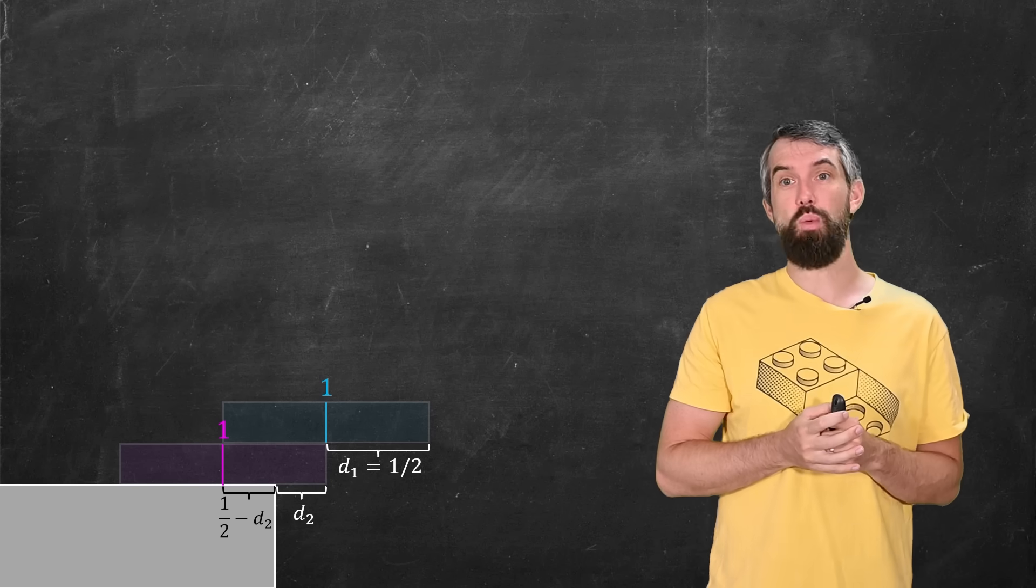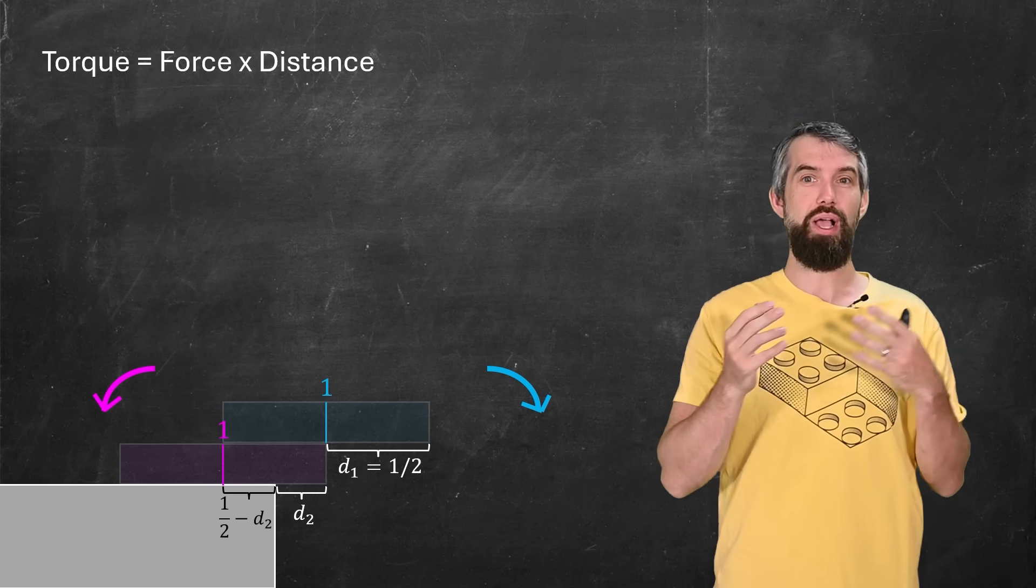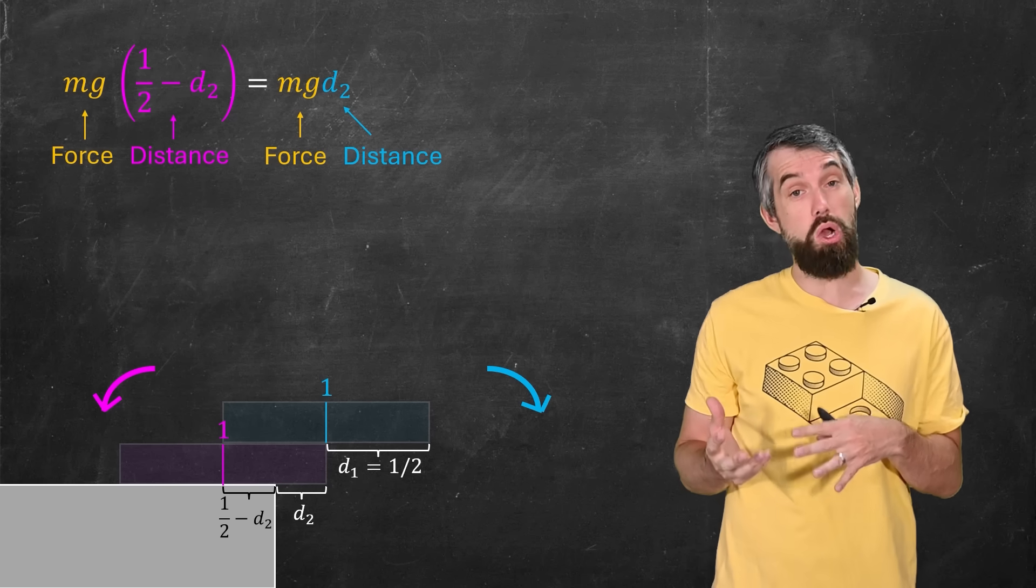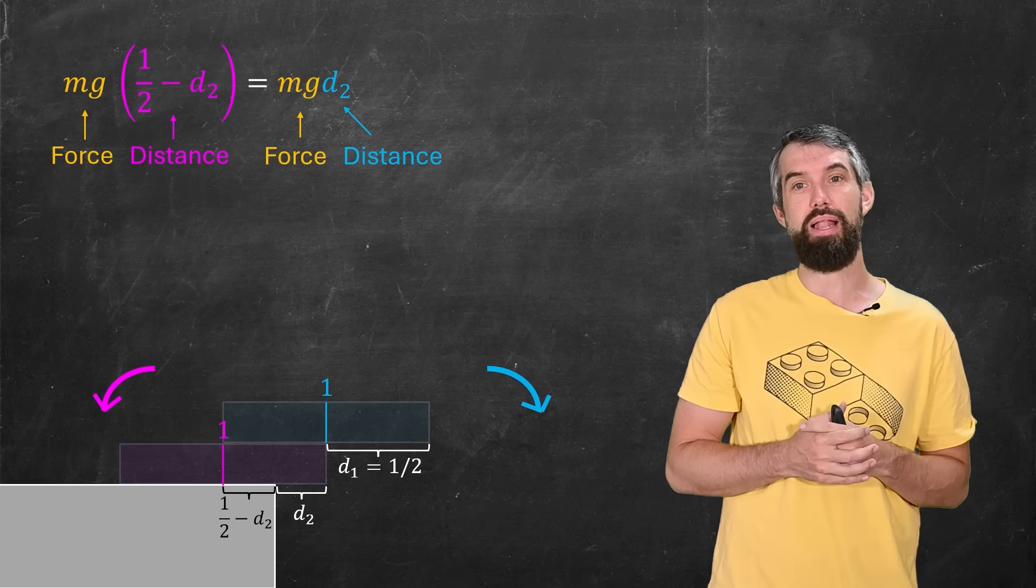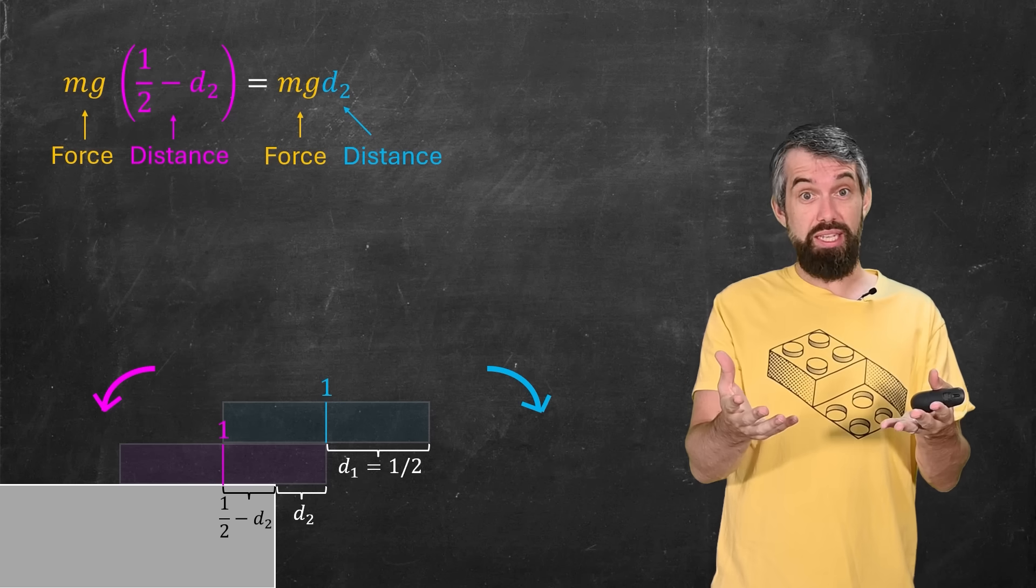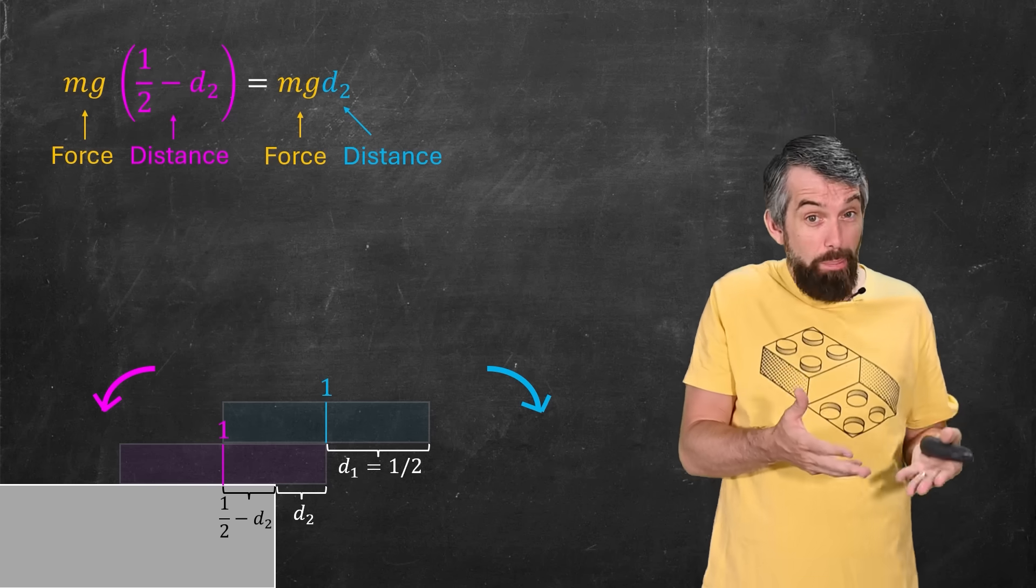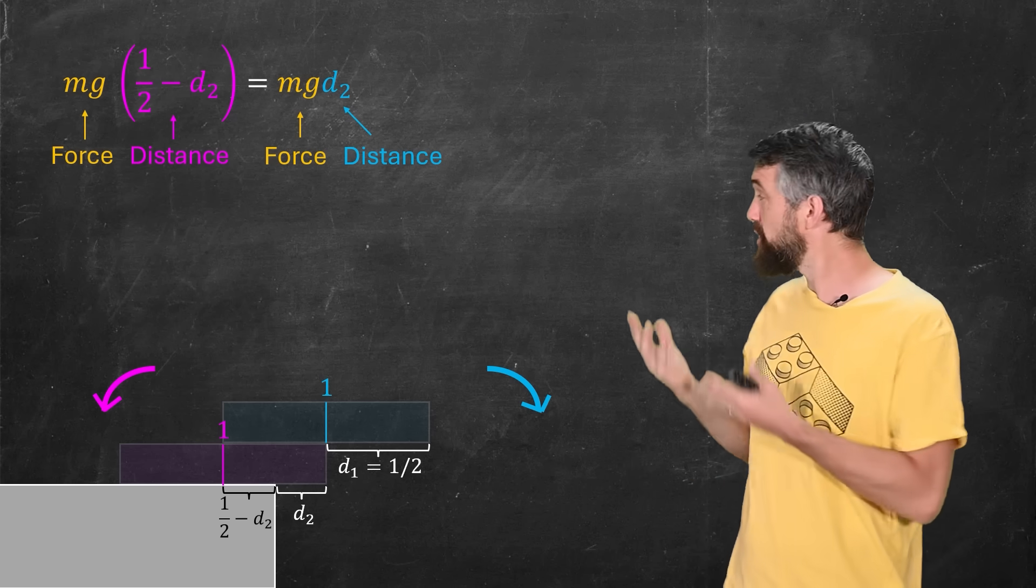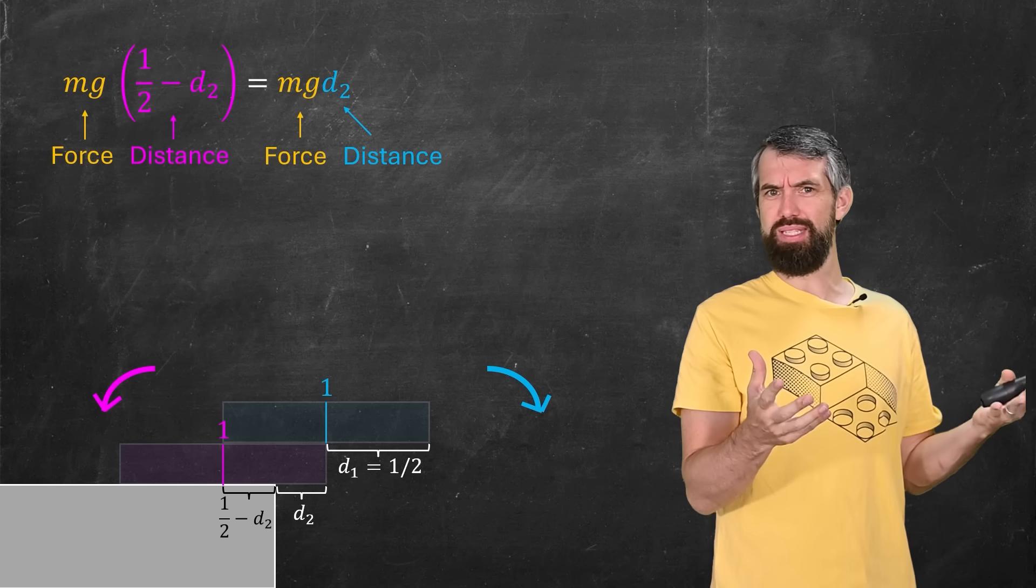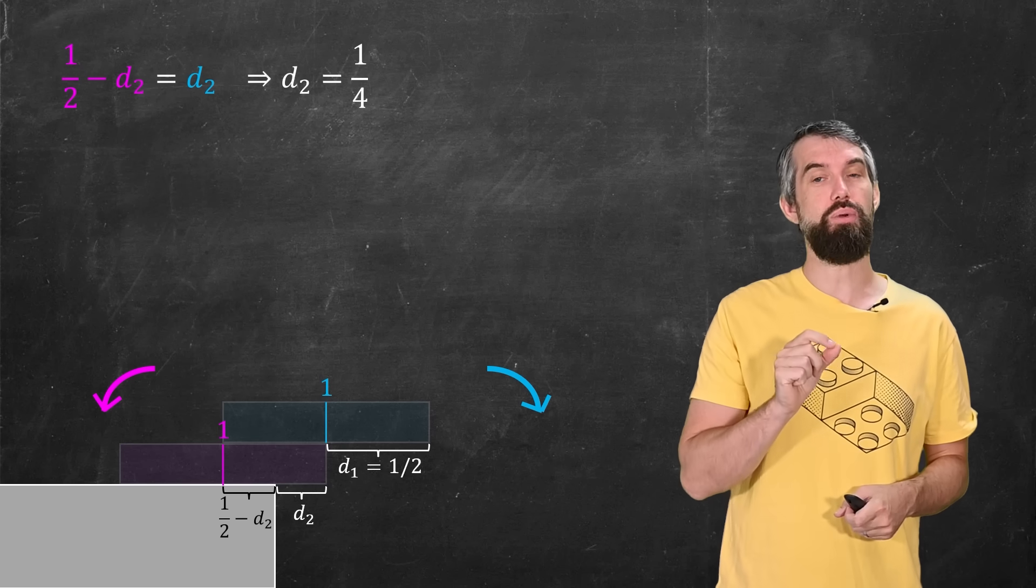Now to balance these, what I'm interested in is the tendency to rotate clockwise or counterclockwise. And this is given in physics by something called the torque. So this is represented by the force multiplied by a distance. And so I want the torque going clockwise and counterclockwise to equate to each other, if this is going to be balanced. Forces are always going to be the same. It's just the mass of the block times gravity. But for the distances, the bottom block has a distance of one half minus d2 from the edge. And the top block has a distance d2 from the edge. And so I have this equation equating the two different torques. It actually doesn't matter what the mass of the block is because it's the same on both sides. They're always going to cancel and simplify. And now I can solve. This just gives me that d2 is a quarter.